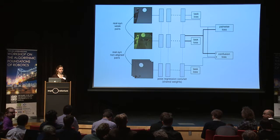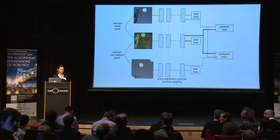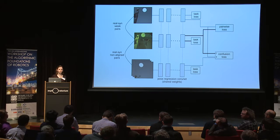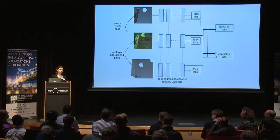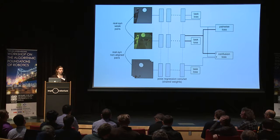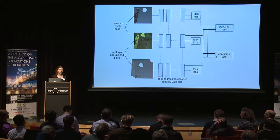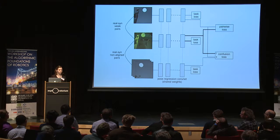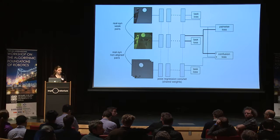Asked whether 100 real images was necessary for such a simple case, the presenter noted they did not run an ablation on the number of real images, but emphasized the key point is that the images are unlabeled — just moving objects around and taking images from the robot's camera. Prior work required 5,000 unlabeled or 1,000 labeled images, so 100 is already a significant reduction. Whether 10 images would suffice is unknown and could be tested.